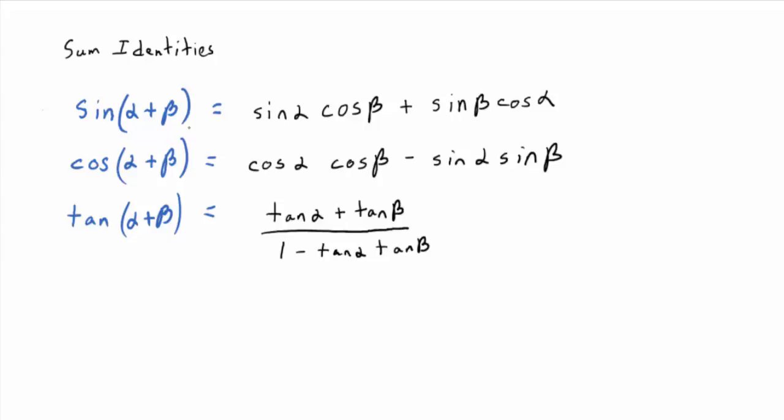There are difference identities as well, but it's not really three more separate ones to remember. If you remember these three sum identities, you can come up with the difference identities. For sine of alpha minus beta, just change the plus to a minus. For cosine of alpha minus beta, it's cosine alpha cosine beta plus sine alpha sine beta. For tangent of alpha minus beta, the plus on top changes to minus, and the minus on the bottom changes to plus.